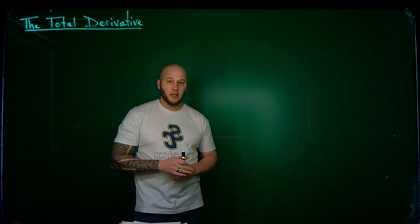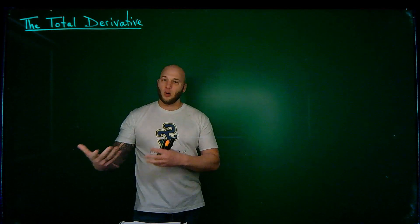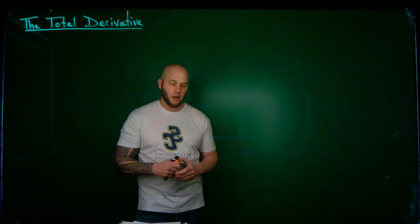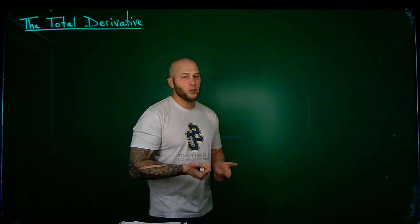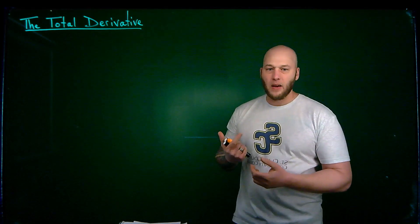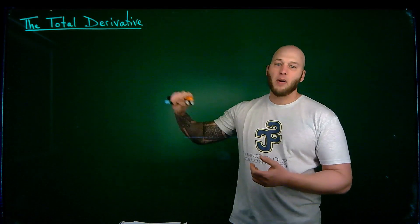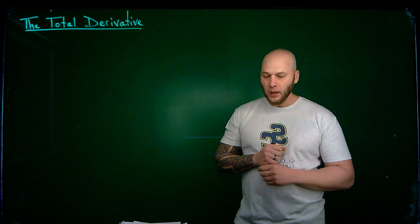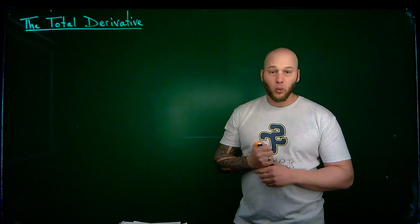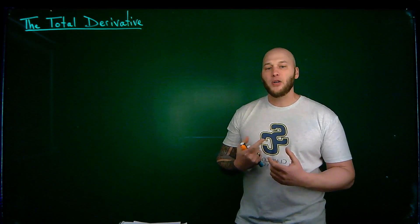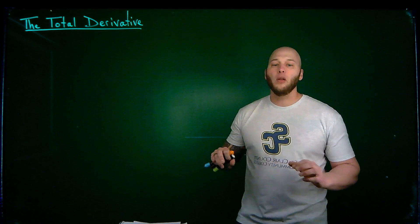The idea is it is sort of in line with the difficulty of those materials. So let's go ahead and talk about it. A partial derivative approximates a function in one direction, or with respect to one variable. A total derivative provides an approximation of a function using all of the variables.